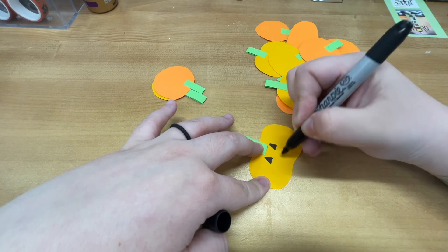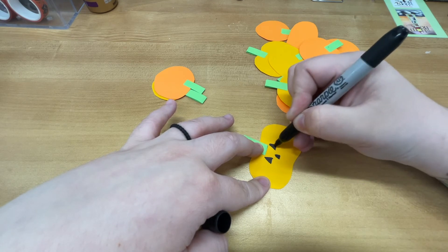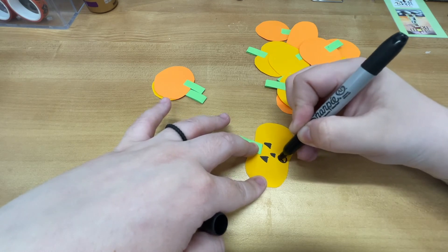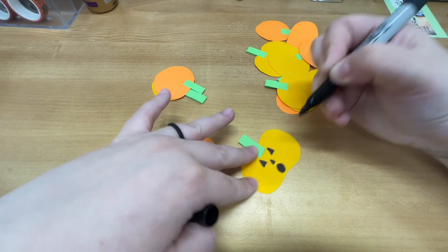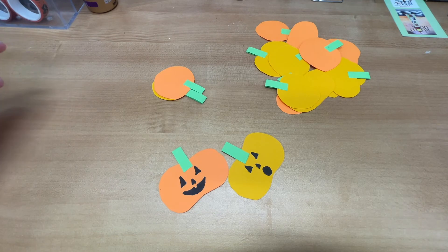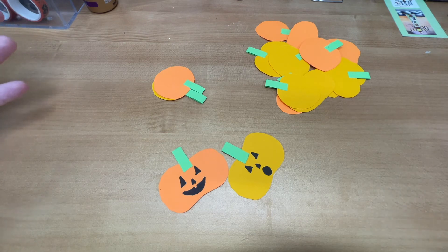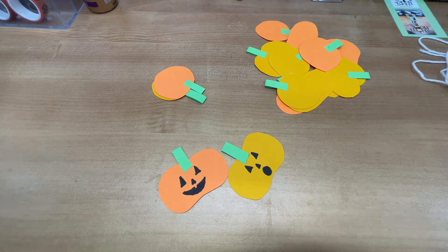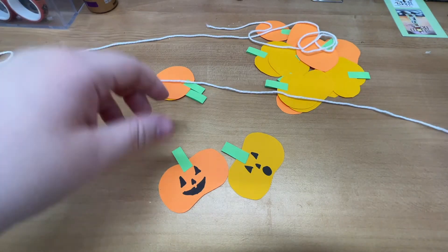But what's great about these is you can really do as many different types of faces as you want. I'm going to do a pattern, I'm going to go back and forth. But you can do scared, mad faces - really take this time to be creative with your pumpkins. And once you've done that, once you've colored in all of your pumpkins, you take your string.